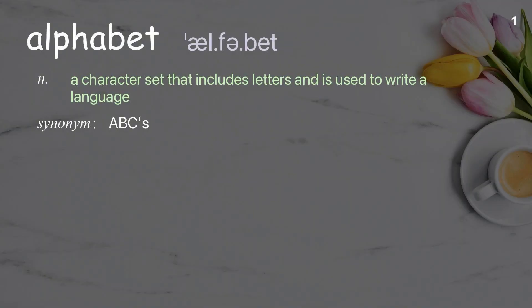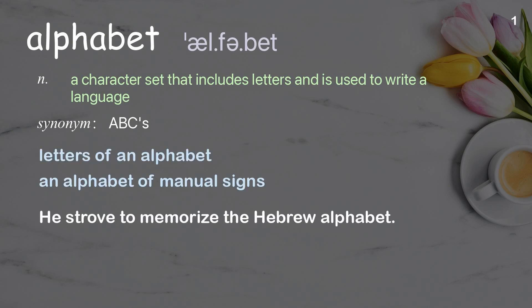Alphabet: A character set that includes letters and is used to write a language. Examples: Letters of an alphabet. An alphabet of manual signs. He strove to memorize the Hebrew alphabet.